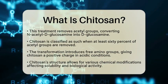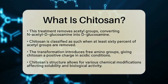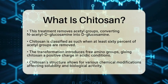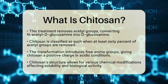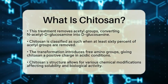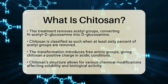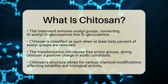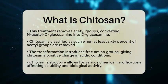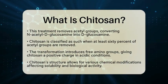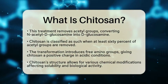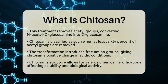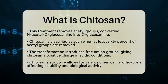This transformation introduces free amino groups on the polymer chain, allowing chitosan to carry a positive charge in acidic conditions. This unique feature makes chitosan a natural polycation, which means it can interact with negatively charged substances.